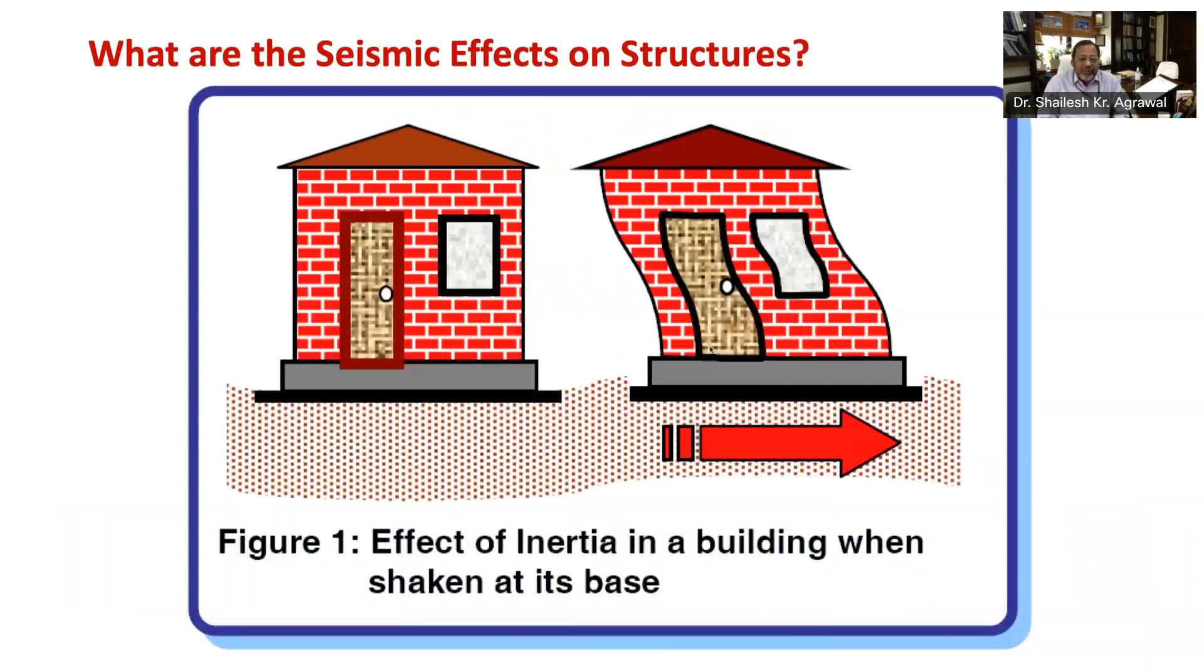And that is shown in this figure. It is learned from Newton's first law of motion that even though the base of building moves with the ground, the roof, being heavier, has the tendency to stay in its original position. This roof is connected to the ground through walls and columns, which try to drag the roof along with them. Let's understand it with another analogy. When you are standing in a stationary bus and the bus is suddenly started, your feet move with the bus, but your upper body tends to stay back, making you fall backwards.